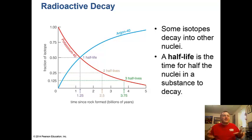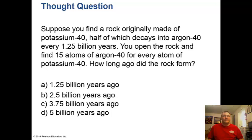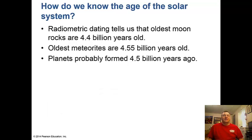Isotopes, which are flavors of different atoms, decay into other nuclei. A half-life is the time for half the nuclei of a substance to decay. Radiometric dating tells us that the oldest moon rocks are about 4.4 billion years old, the oldest meteorites are about 4.55 billion years old, and the planets themselves probably formed about 4.5 to 4.6 billion years ago.